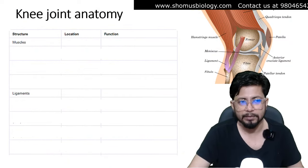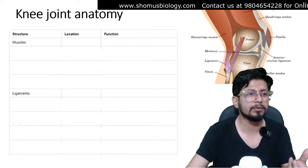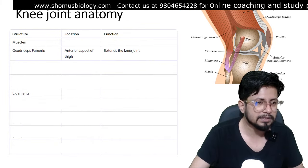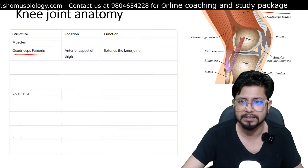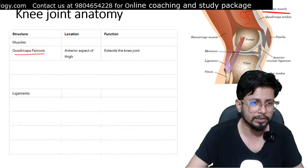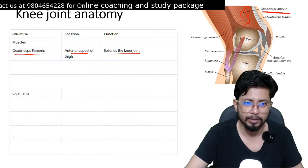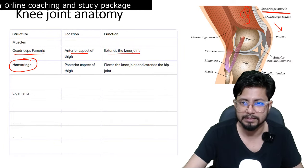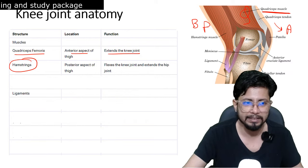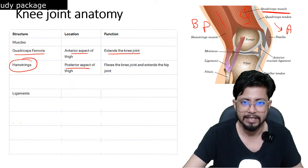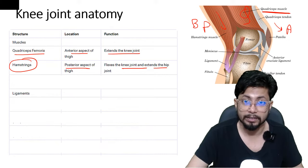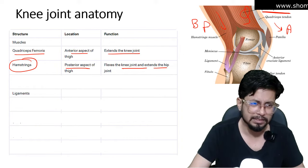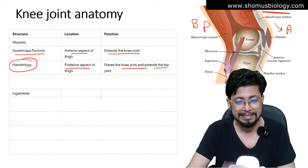Now let's discuss muscles, tendons, blood supply, and nerves attached to the knee joint. First, quadriceps femoris — located on the anterior aspect of the thigh — extends the knee joint. Next, the hamstrings — located on the posterior aspect of the thigh — flex the knee joint and extend the hip joint. Because hamstrings cross both the knee and hip, a hamstring strain can cause problems in both joints.